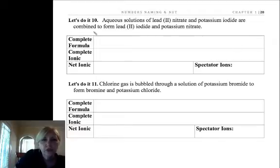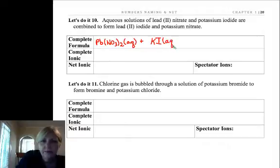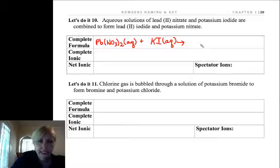So let's do first our complete formula. We have solutions of lead two nitrate. Lead is plus two, nitrate is minus one, so that's lead two nitrate. It said solution of, so that's aqueous, plus potassium iodide. K is plus one, iodide is minus one. Now very quickly you're going to be able to predict these products. For now I've given them to you. We have lead two iodide and we have potassium nitrate.